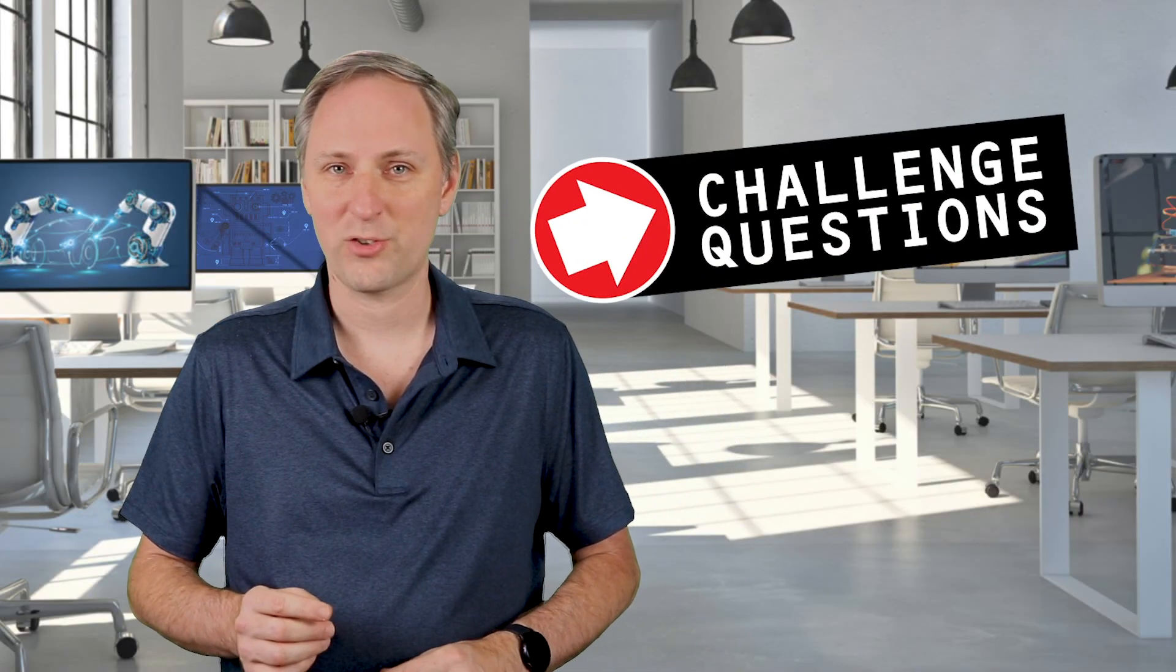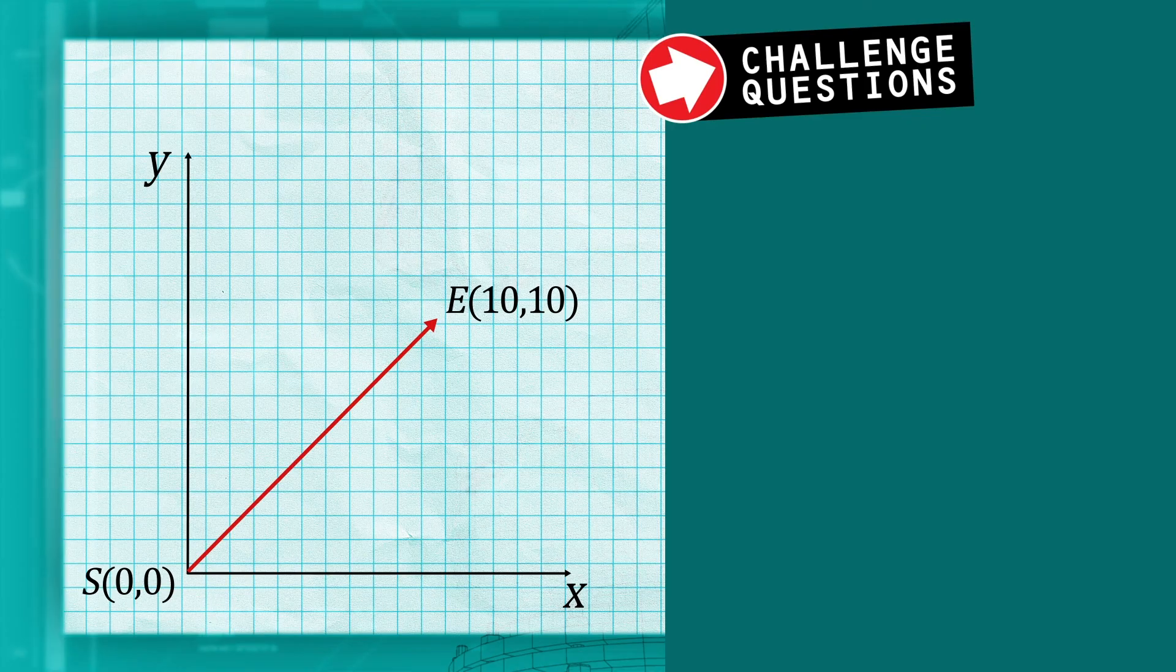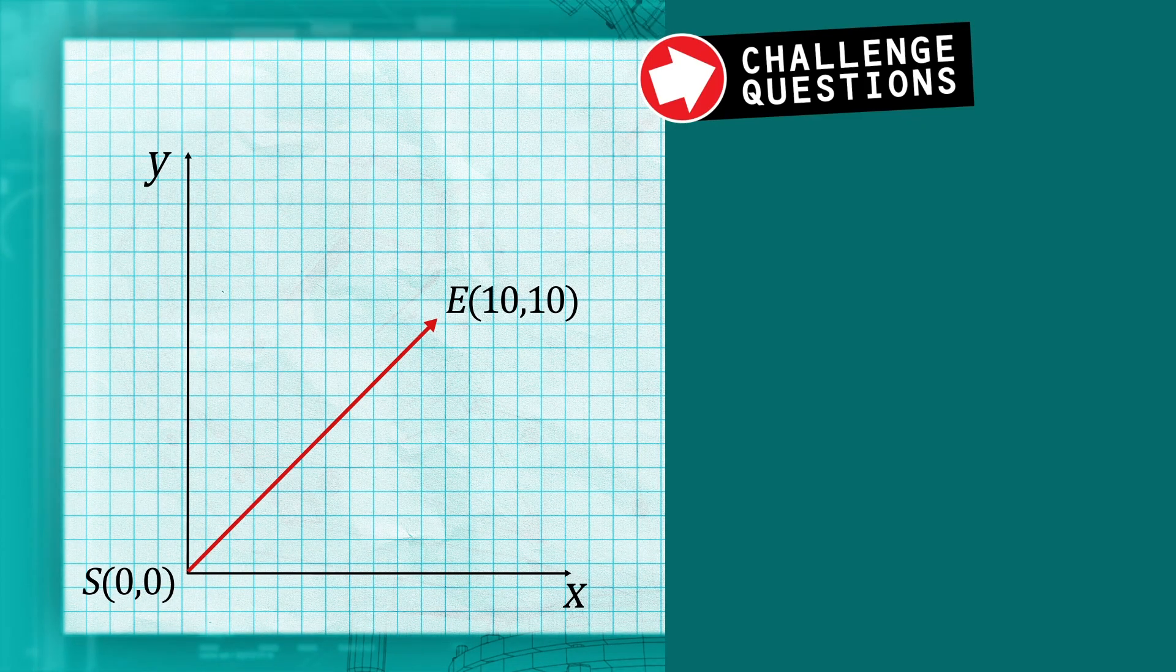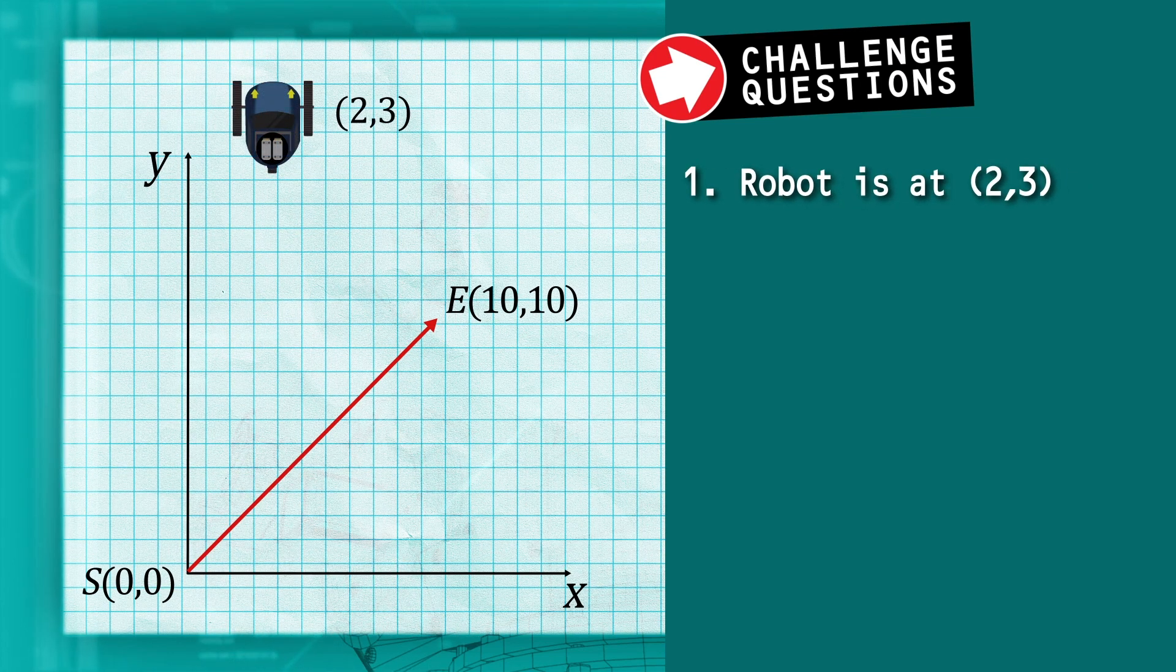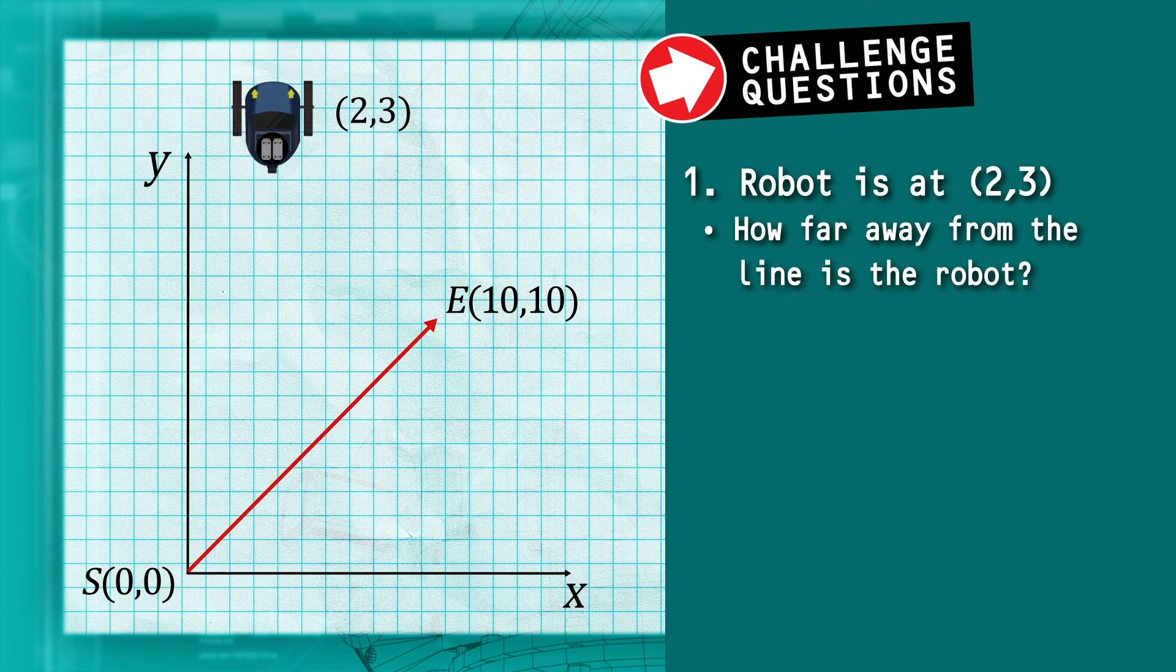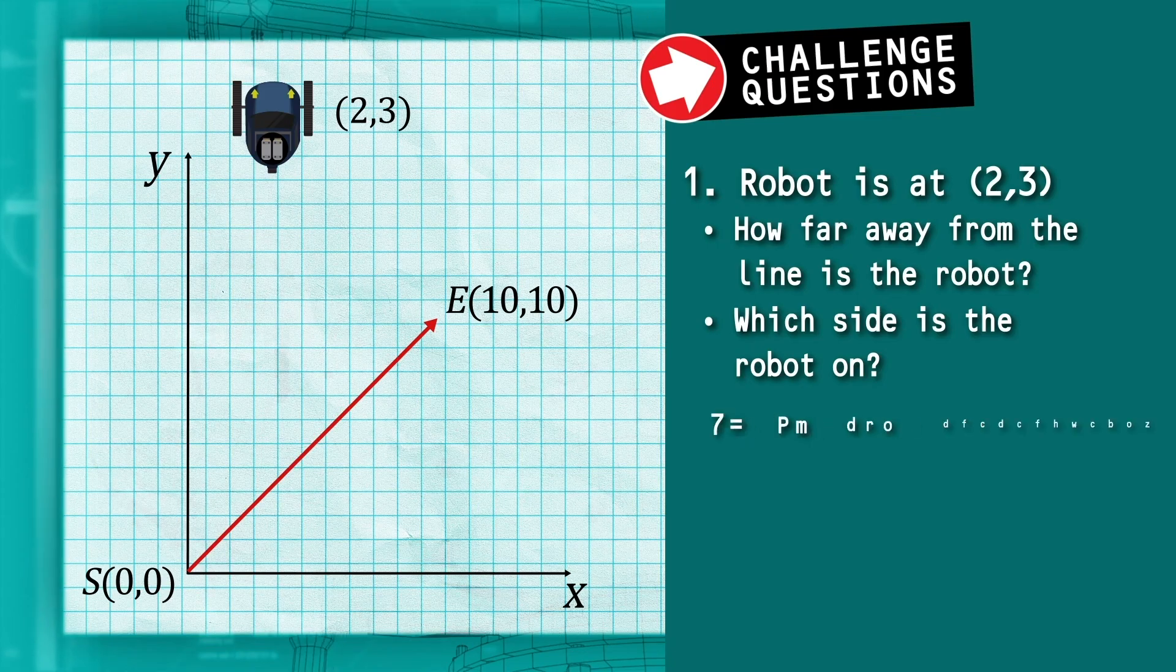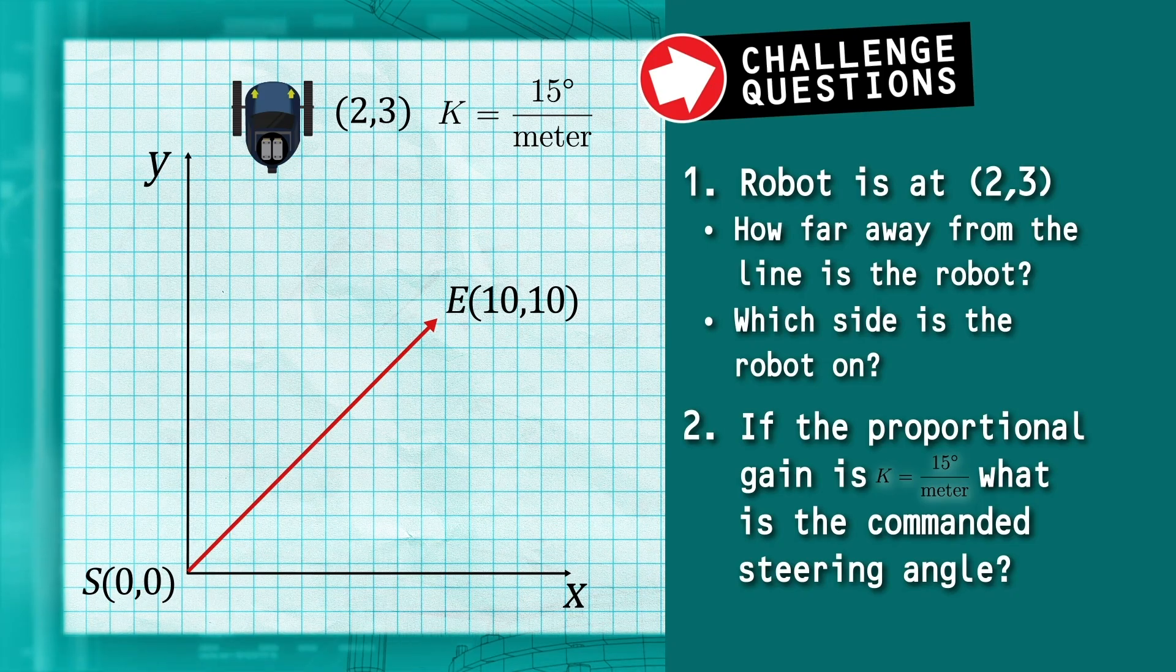Now, for this week's challenge questions. A robot wants to follow a diagonal line going through the origin and a point at 10-10. Question 1: If the robot is at 2-3, how far away from the line is the robot, and on which side? Question 2: If the proportional gain is 15 degrees per meter, what is the commanded steering angle from the controller?